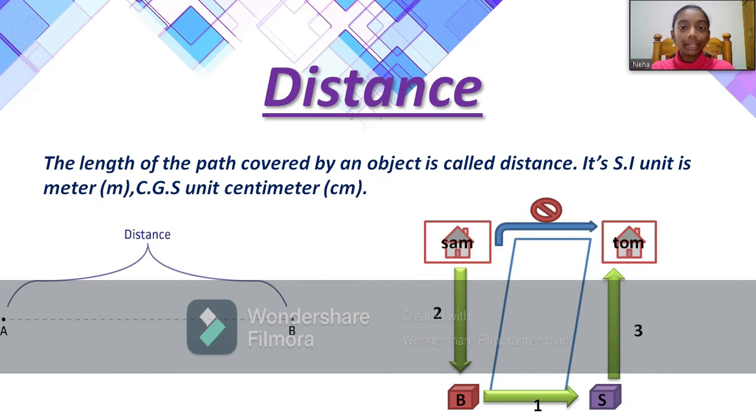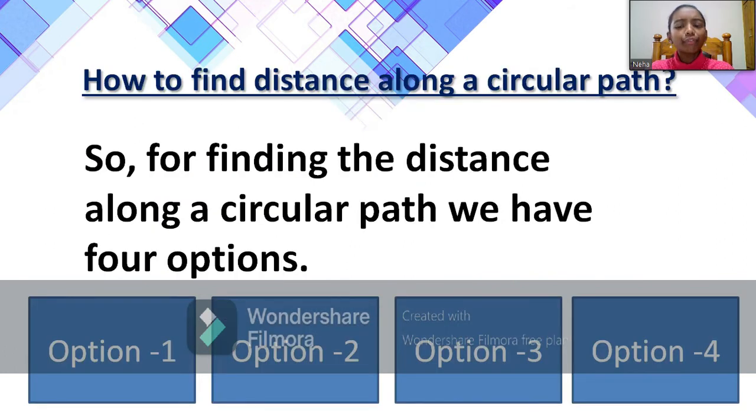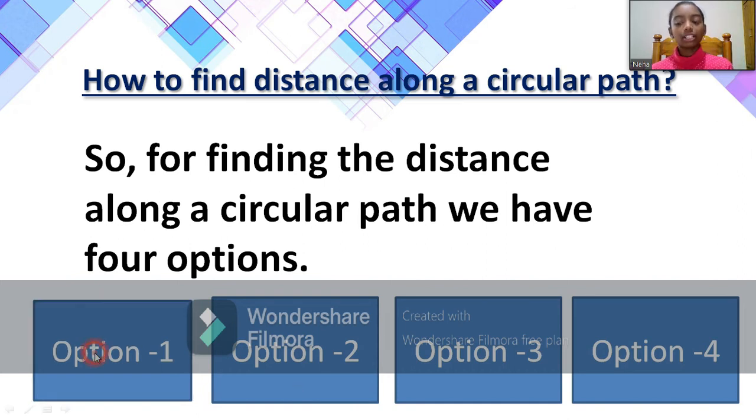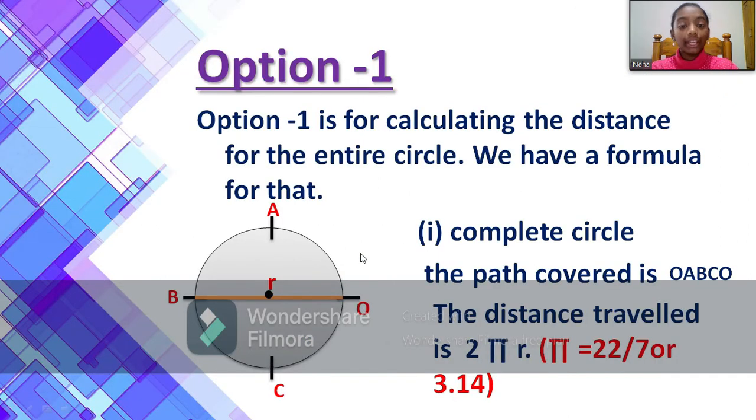Now let us go to our next topic, which is finding out distance for a circular path. So for finding out distance along a circular path we use four options. Let us go to the first option.